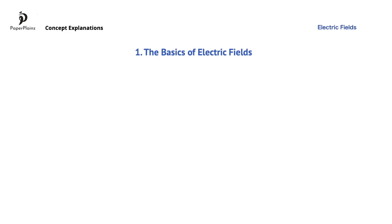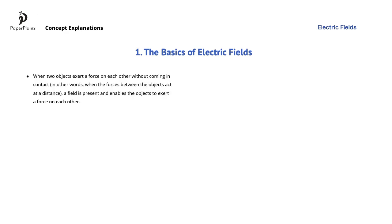We can generalize the idea of a field in physics like this. When two objects exert a force on each other without coming in contact — in other words, when the forces between the objects act at a distance — we say that a field is present which enables the objects to exert a force on each other. The idea of a field in physics is very powerful because different types of fields behave similarly. If you understand how one type of field works, you should be able to easily understand the properties of other types of fields. The three types of fields you will learn about in IB Physics are electric, magnetic, and gravitational fields.